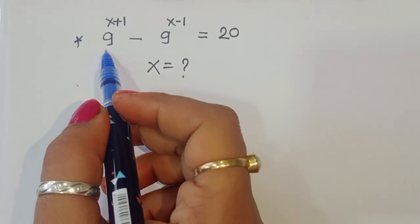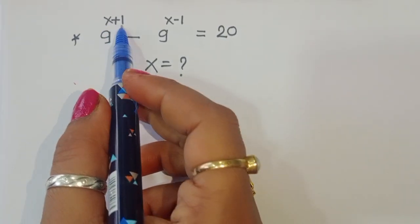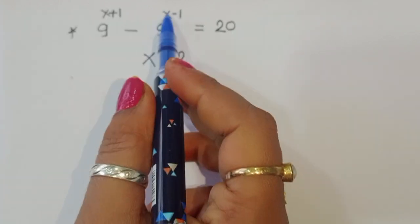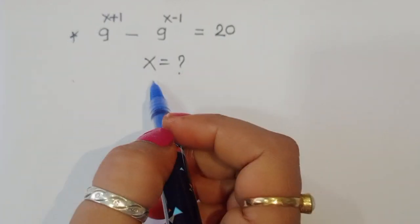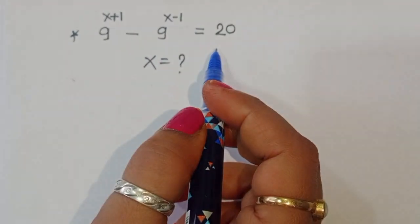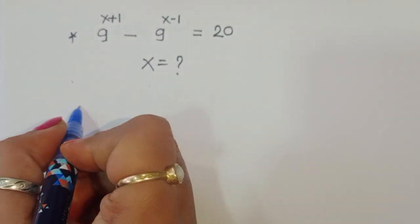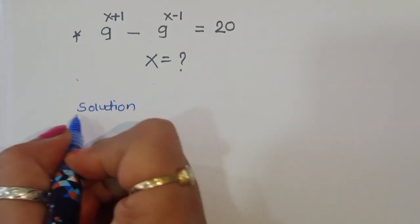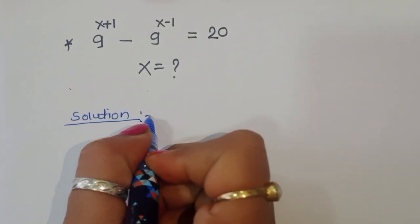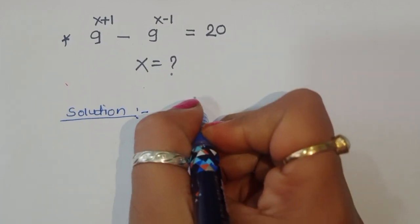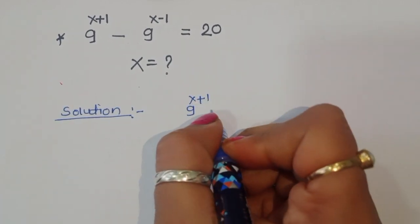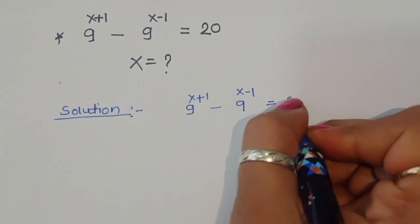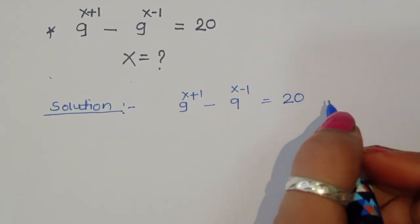The question is: given 9 power (x+1) minus 9 power (x-1) is equal to 20, we have to find out the value of x. Let's see how we can find the value of x in this equation.